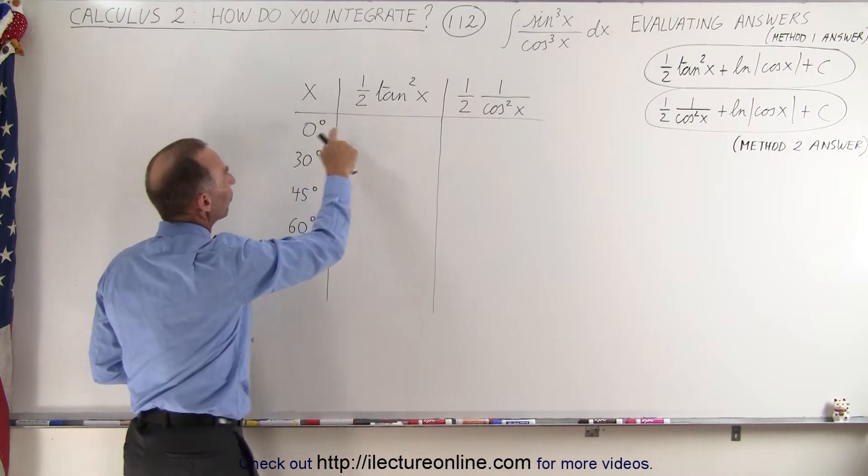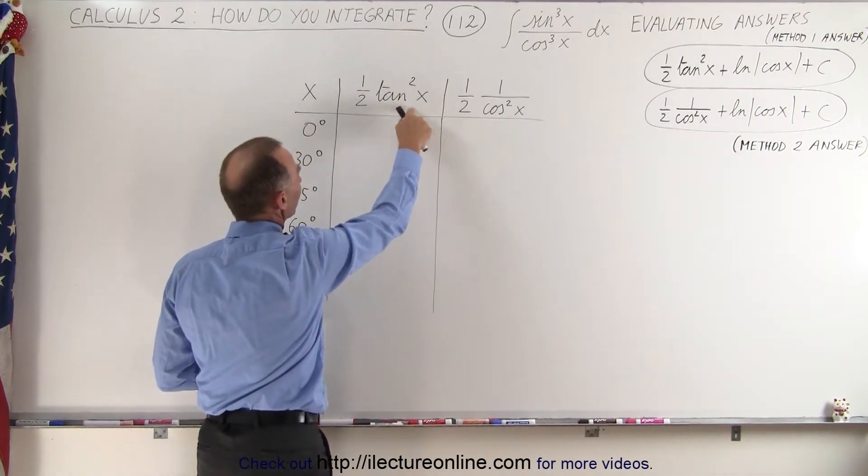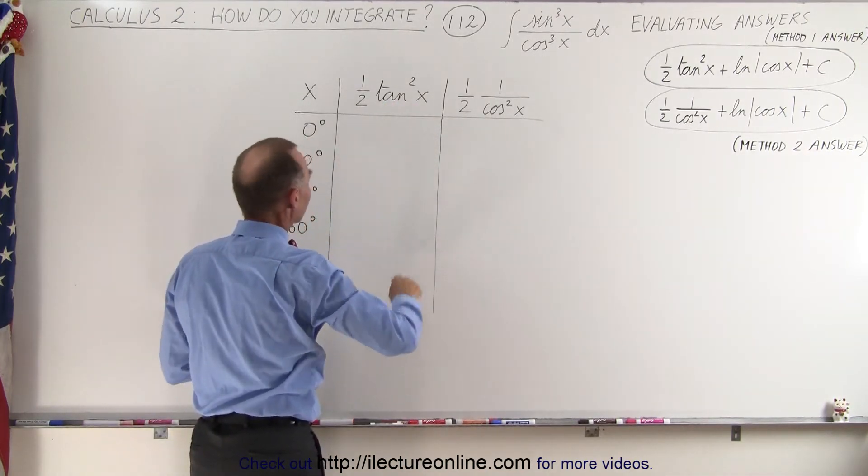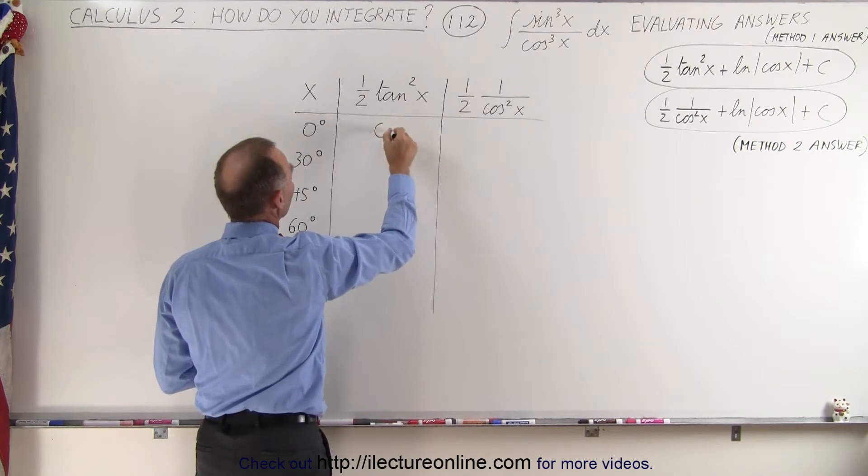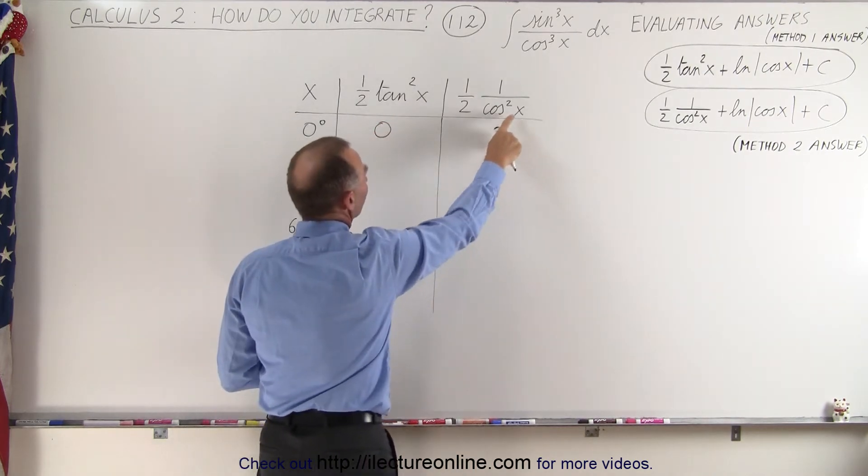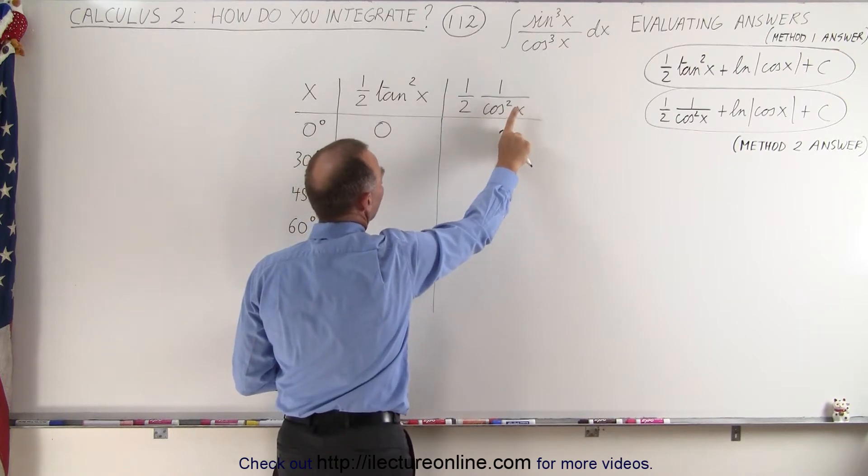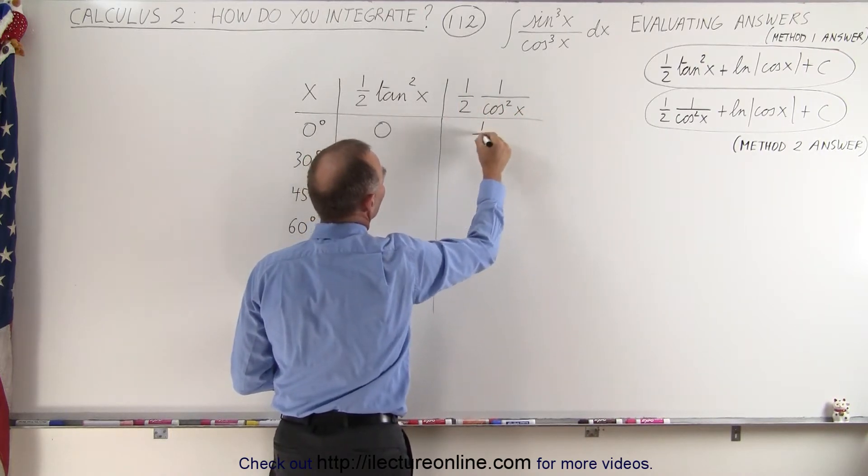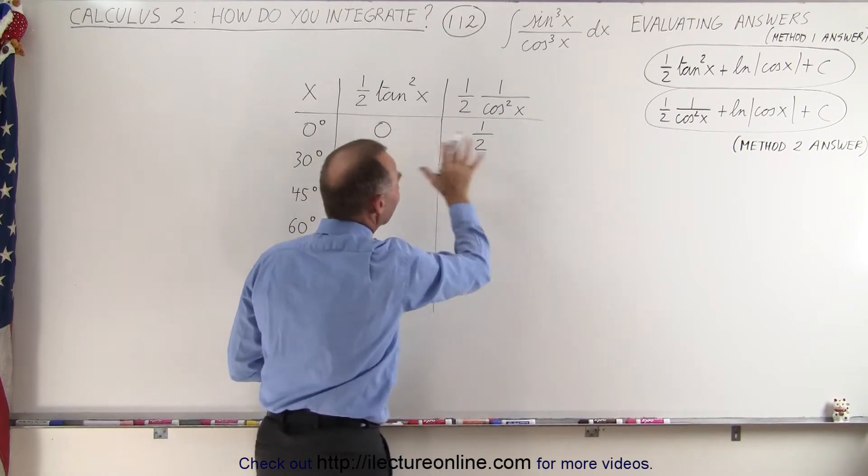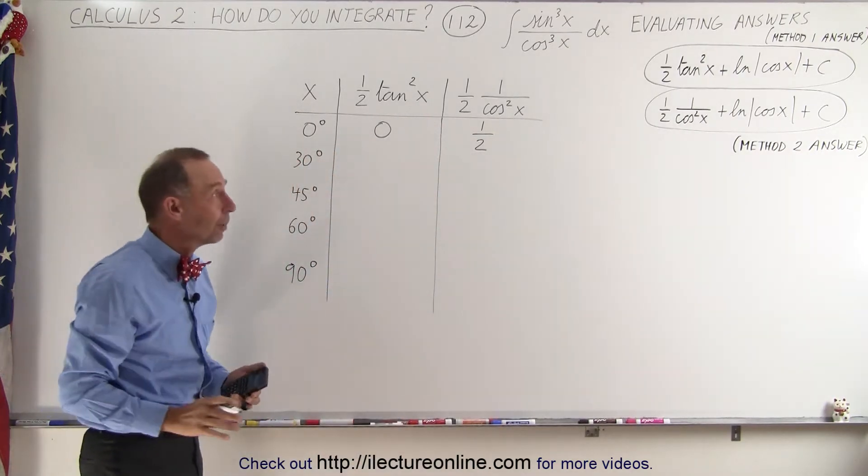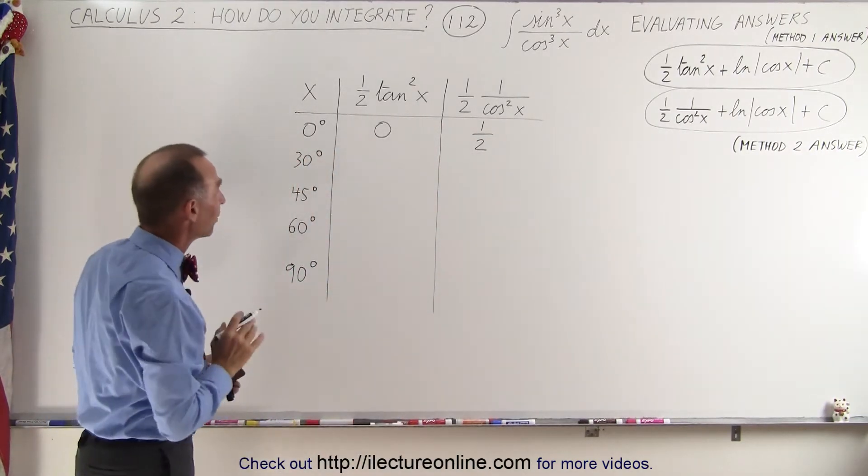So when we plug in 0 for x here, the tangent of 0 is 0, so one half times 0 gives us simply 0. Here when we plug in 0 for x in the cosine squared of x, the cosine of 0 is 1, one half times 1 is one half. So you can see that you do not get the same answer when you plug in numbers, but stay tuned and see what happens here.